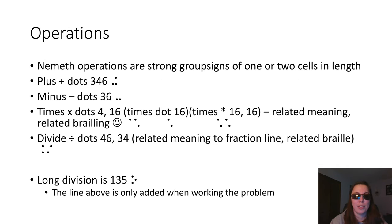So our operations, those plus, minus, times, and divide. Let's get into them. Nemeth operations are sometimes strong group signs of one or two cells in length, except for the minus sign, which is a lower group sign. Our plus sign is dots 346. Looks just like a UEB ing. Our minus sign is dots 36. Note that's the very bottom of the cell to do a minus sign.